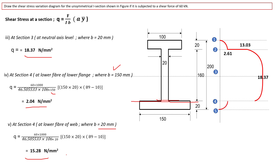This completes the shear stress distribution diagram. Starting from 0 at the top, rising to 2.61 N/mm² at the bottom of the top flange, jumping to 13.03 N/mm² in the web, reaching a maximum of 18.37 N/mm² at the neutral axis, then 15.28 N/mm² just above the bottom flange junction, dropping to 2.04 N/mm² in the bottom flange, and returning to 0 at the bottom. Thank you.